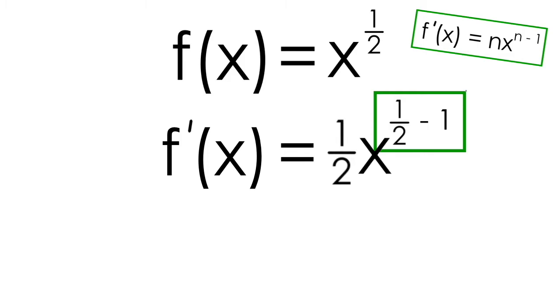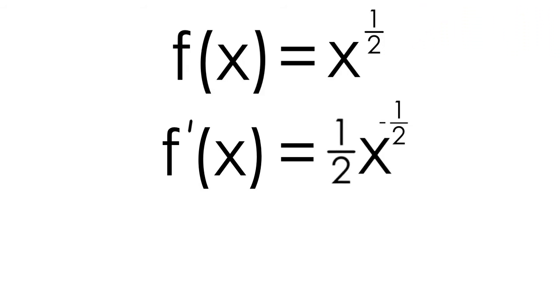My first denominator is 2, so I want to rewrite 1 somehow with a denominator of 2. We know that 2/2 = 1, so that should work. 1/2 - 2/2, subtracting the numerators and keeping the denominators the same, results in -1/2 for the exponent.